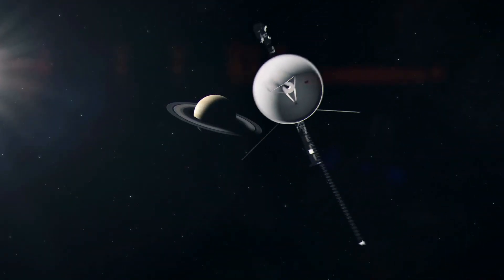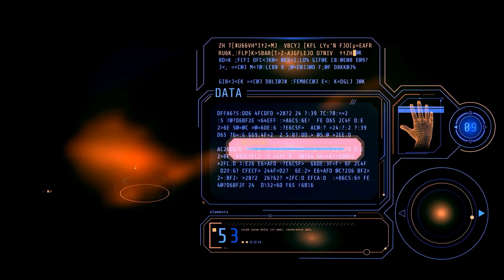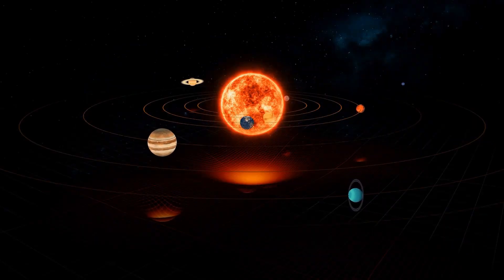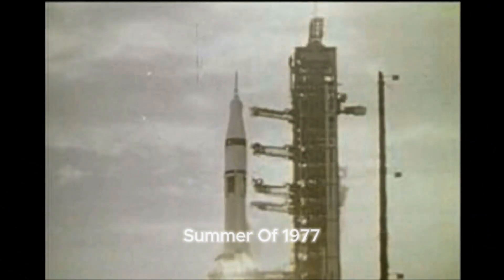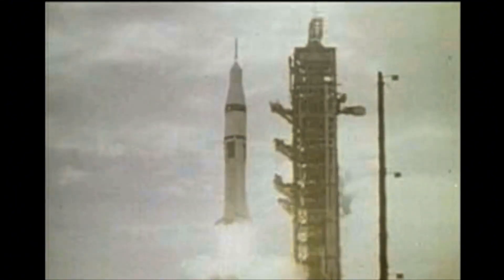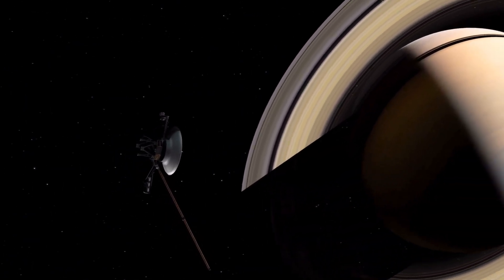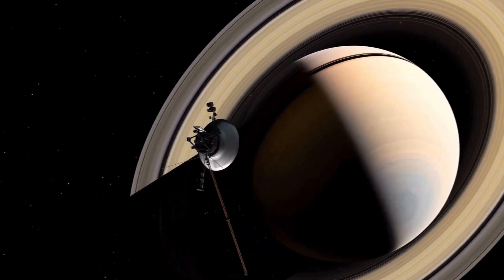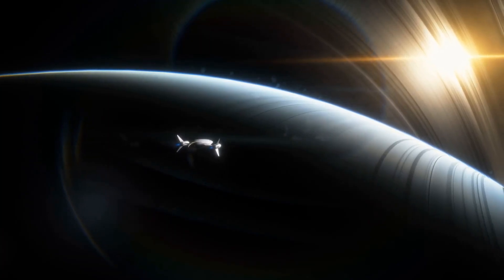For nearly five decades, the Voyager missions have been our celestial messengers, sending back extraordinary glimpses of our solar system and beyond. Launched in the summer of 1977, Voyager 1 and Voyager 2 were originally designed for a mere five-year mission. Their success was so overwhelming that they far exceeded every expectation.